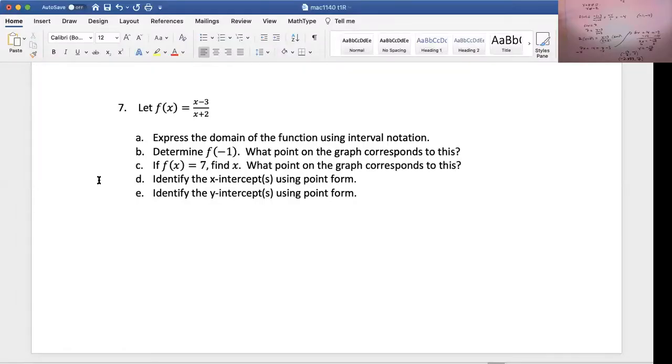Next, I want us to identify the x-intercept or intercepts using point form. What is an x-intercept? Where the graph crosses the x-axis. So let's think about that analytically first before we look at the graph. So we have f of x is x minus 3 over x plus 2. Where something crosses the x-axis, the y value is 0. That's going to be your idea. So an x-intercept will occur if the y value is 0. So the y value, of course, is f of x. So when does 0 equal x minus 3 over x plus 2? A fraction is 0 if the numerator is 0. So if 0 equals x minus 3. So if x equals 3. So I believe the point 3 comma 0 is the only x-intercept.